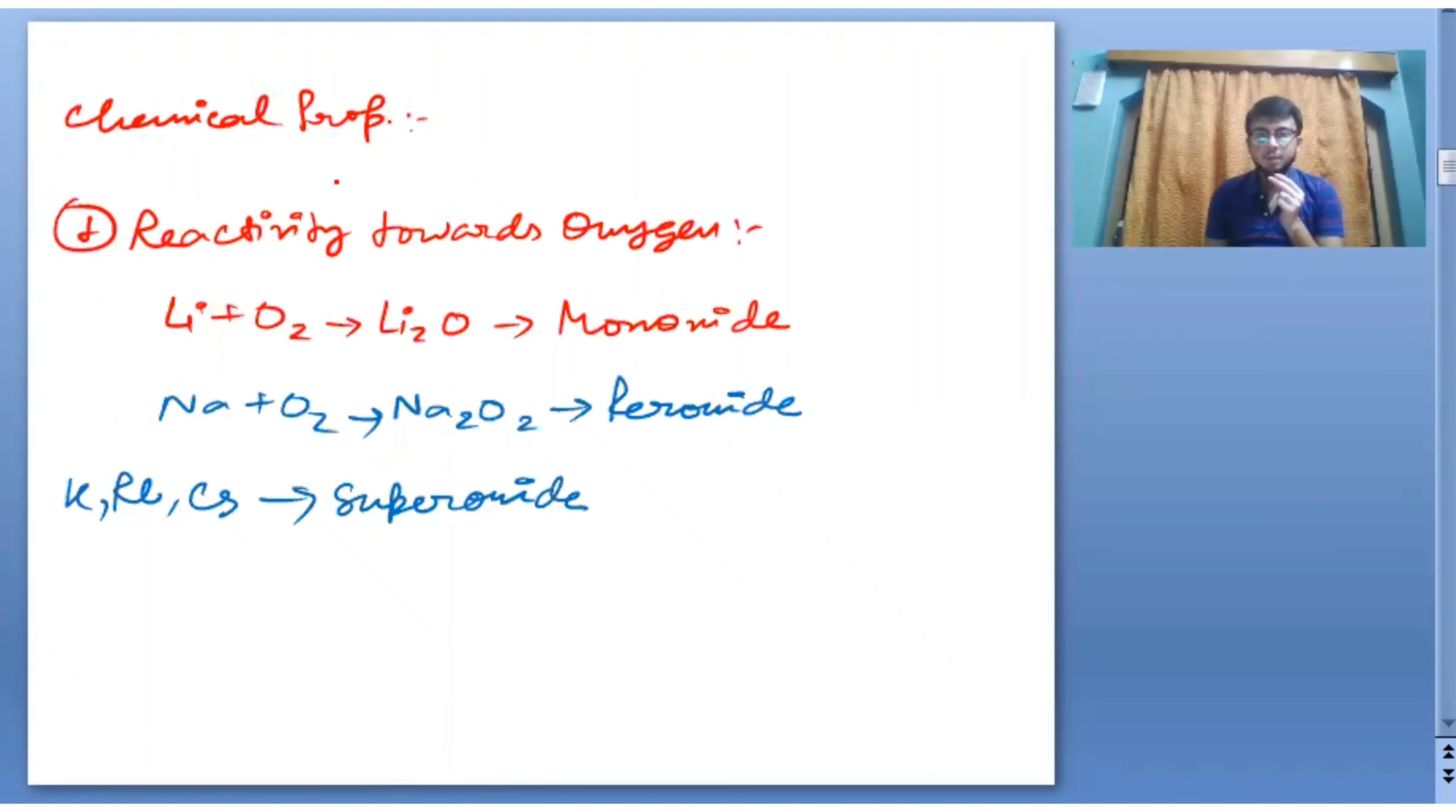Next is chemical properties, reactivity towards oxygen. Li plus O2 gives us Li2O, that is a monoxide. But Na plus O2 gives us Na2O2, a peroxide. And the rest of the three metals - potassium, Rb, and cesium - give us superoxide. Please remember: first metal gives monoxide, second metal peroxide, and the rest are superoxide.